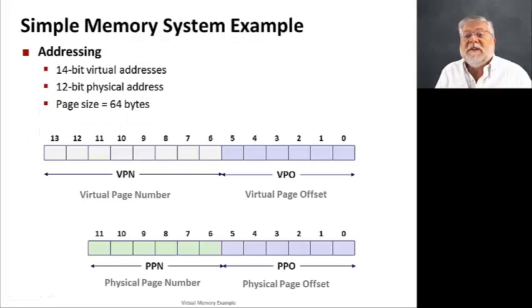So here's our very simple memory system. We're going to have a 14-bit virtual address and a 12-bit physical address. Not all that many bits, but you get the idea. The page size in this case is going to be 64 bytes, also a very tiny page size, not what we typically see.